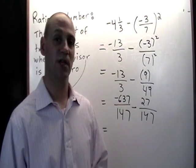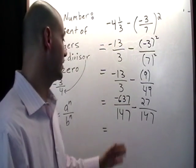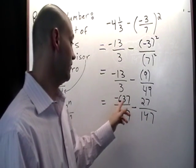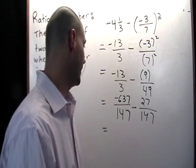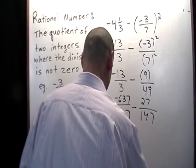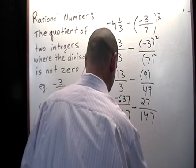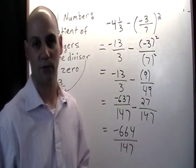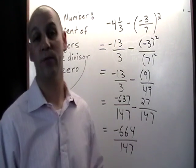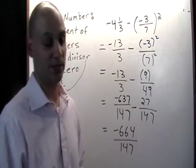Now that we have two fractions that have the same common denominator we can simply add up the numerators and so we have negative 637 minus 27 and that's going to give us negative 664 divided by 147. This answer is technically correct however you may want to convert that back into a mixed number.